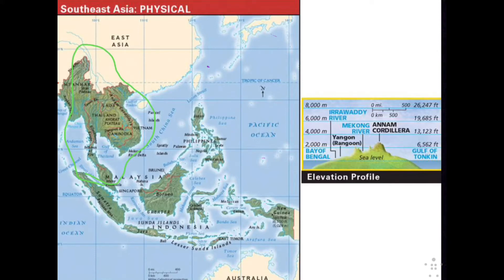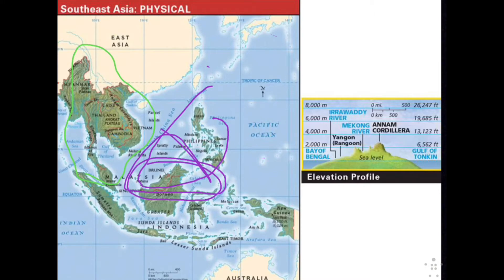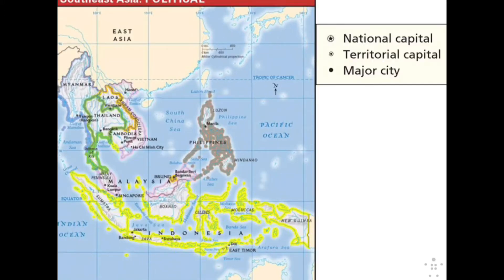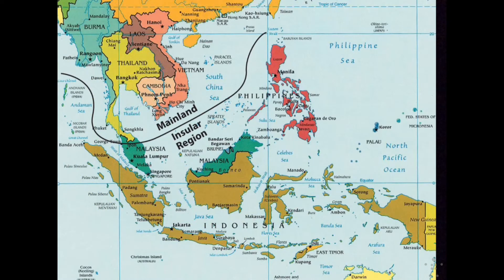Malaysia is referred to as being on both the mainland and the insular regions, because it has islands — which you can see on the right portion of the map — as well as part of the mainland area. Laos, which you can see in orange on the political map, is the only country that does not have a coast within Southeast Asia, and that's going to hurt them economically when we get to that topic.